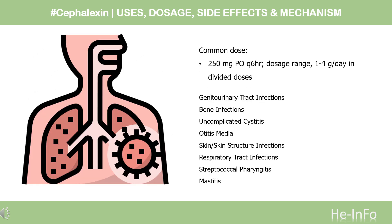Dose: The dose of this medicine will be different for different patients. Genitourinary tract infections: 250 mg PO Q6H, dosage range 1–4 g/day in divided doses. Bone infections: 250 mg PO Q6H, dosage range 1–4 g/day in divided doses. Uncomplicated cystitis: 250 mg PO Q6H, dosage range 1–4 g/day in divided doses. Otitis media: 250 mg PO Q6H, dosage range 1–4 g/day in divided doses.